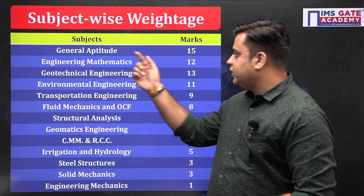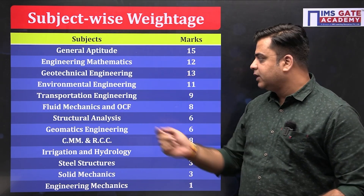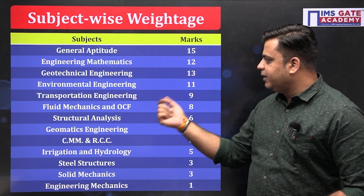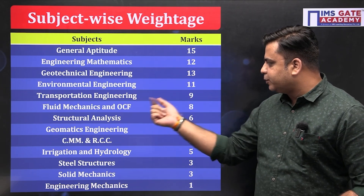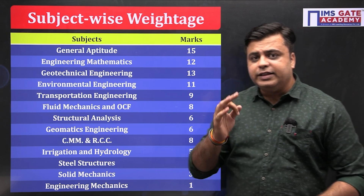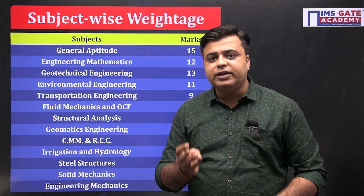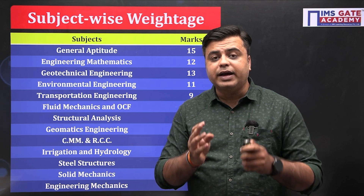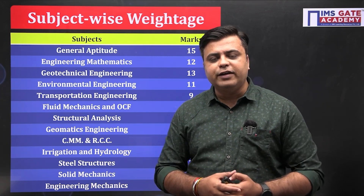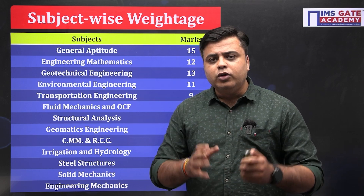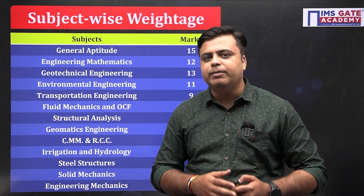So here is the weightage: general aptitude is 15 marks, engineering mathematics is 12 marks, geotechnical engineering 13 marks, environmental engineering 11 marks, and transportation engineering 9 marks. These three technical subjects — geotechnical, environmental, and transportation engineering — comprise the maximum weightage in the GATE examination. Along with maths and aptitude, you have a sure-shot preparation of at least 40 marks in the GATE exam.